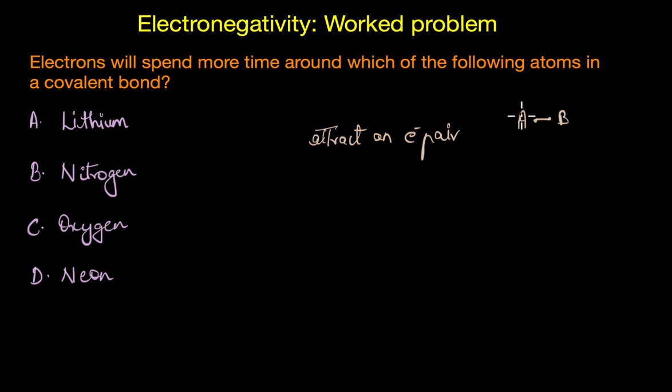If A is more electronegative than B, then the electrons would spend more time around atom A than around atom B. So basically it would become something like this: the electron pair is closer to A and farther from B.